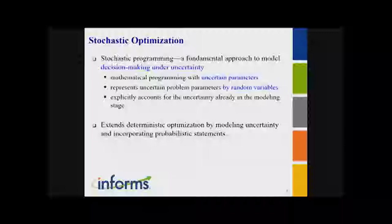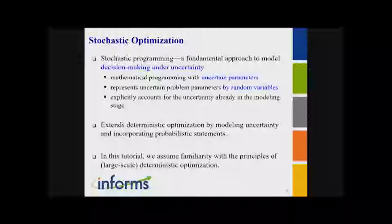Stochastic programming is a common approach that can be used to model decision-making problems in the presence of uncertainty. Basically, it focuses on mathematical programming with uncertain parameters, where the uncertain parameters are represented by random variables. It just extends deterministic optimization by modeling uncertainty and incorporating probabilistic statements. Therefore, in this tutorial, I will assume familiarity with the principles of large-scale deterministic optimization.